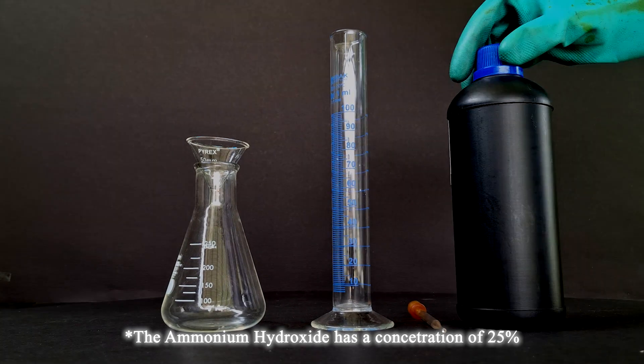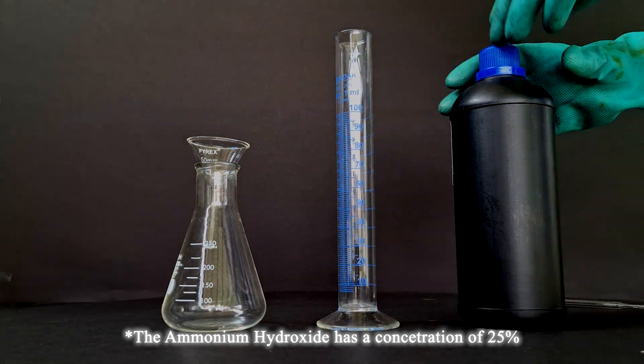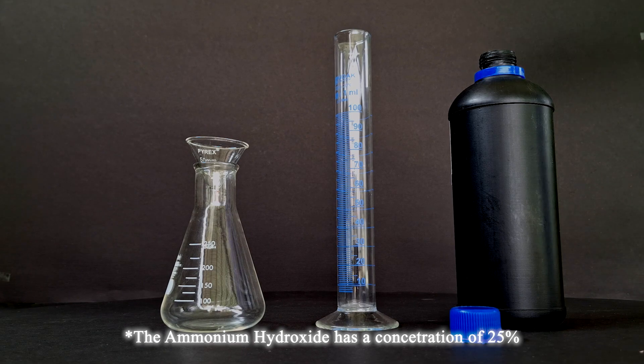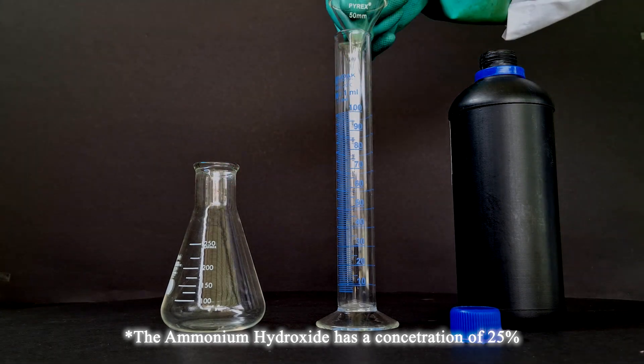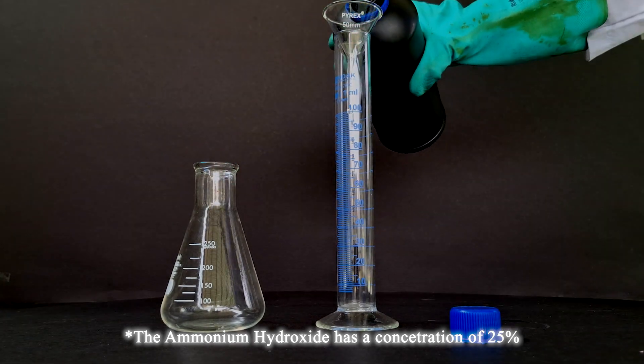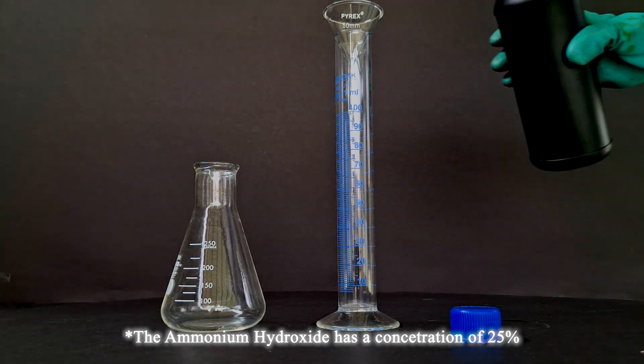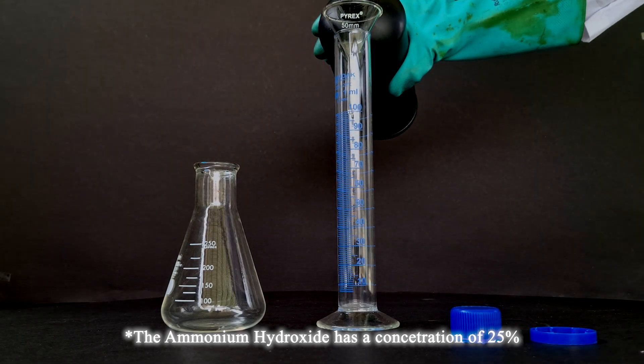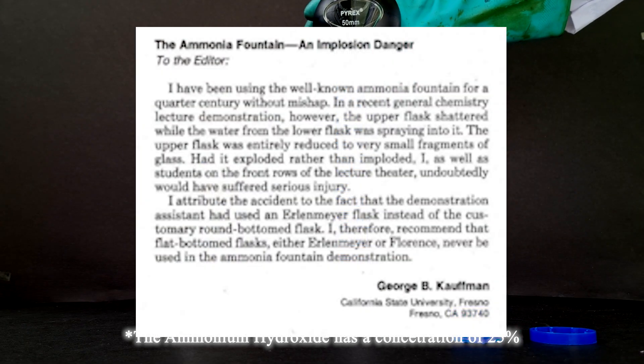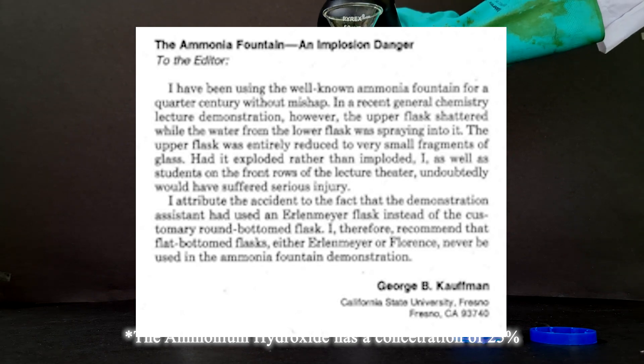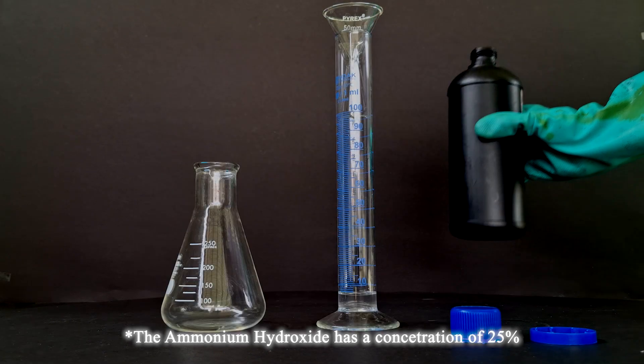This time, we are going to swap the places of the flasks. The Erlenmeyer will now be where ammonia gas is produced. However, whilst researching this experiment, I came across a research paper stating that the use of Erlenmeyers could be dangerous, and instead advised to use a boiling flask as an ammonia preparation chamber.